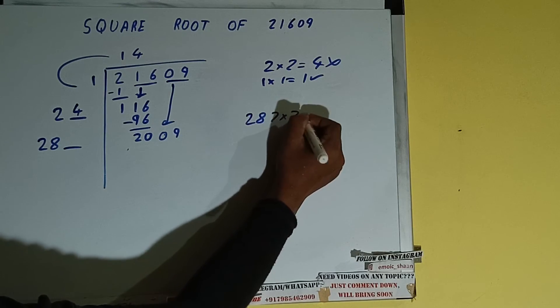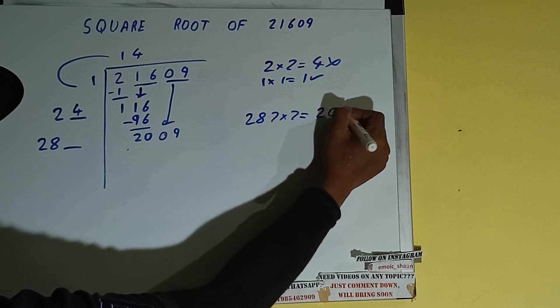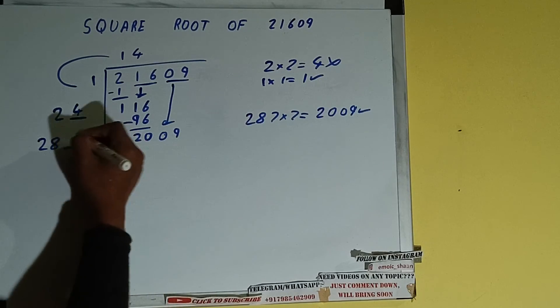287 into 7 we can try, and it will be 2009, which is good to take. So 7 here and 7 here.